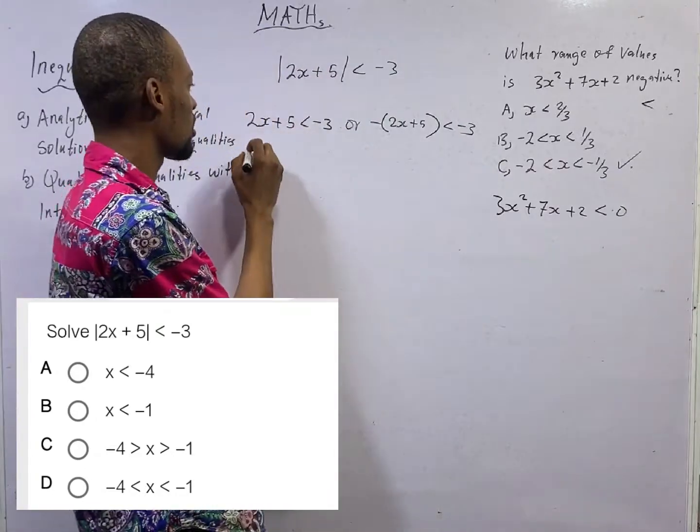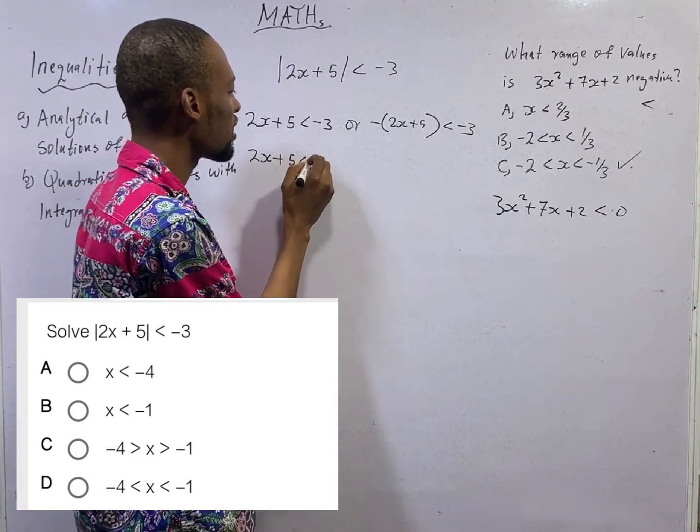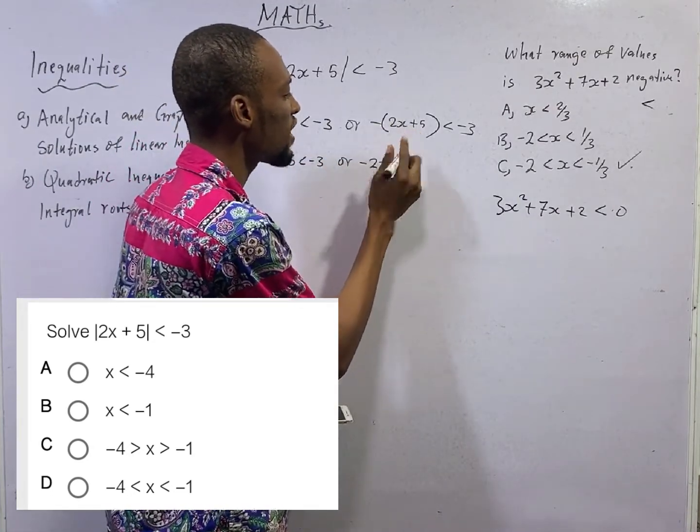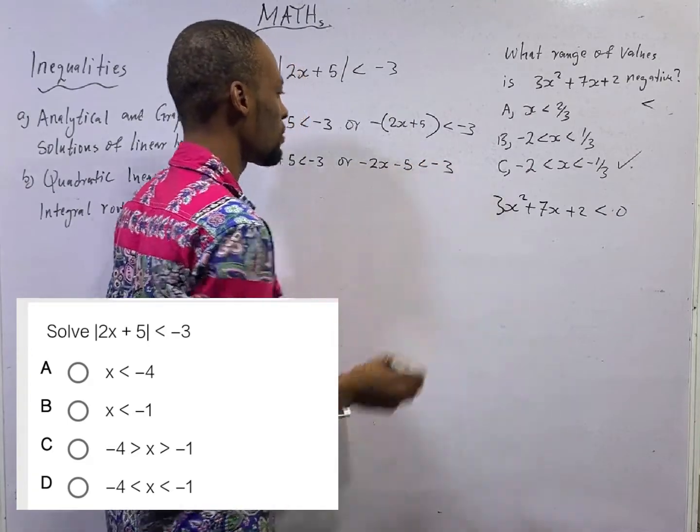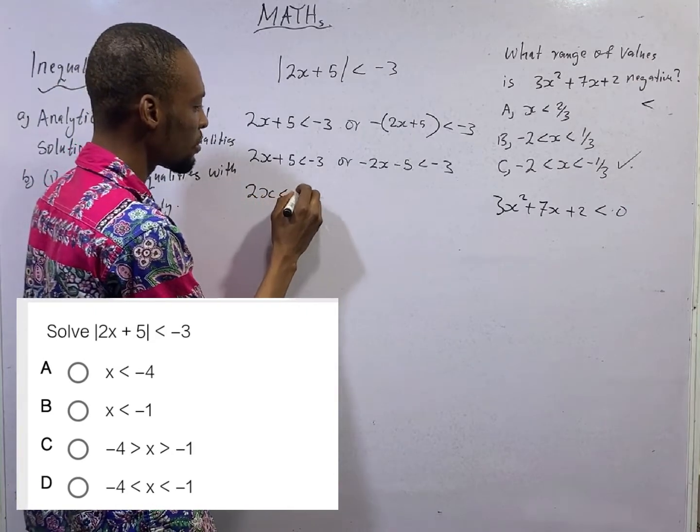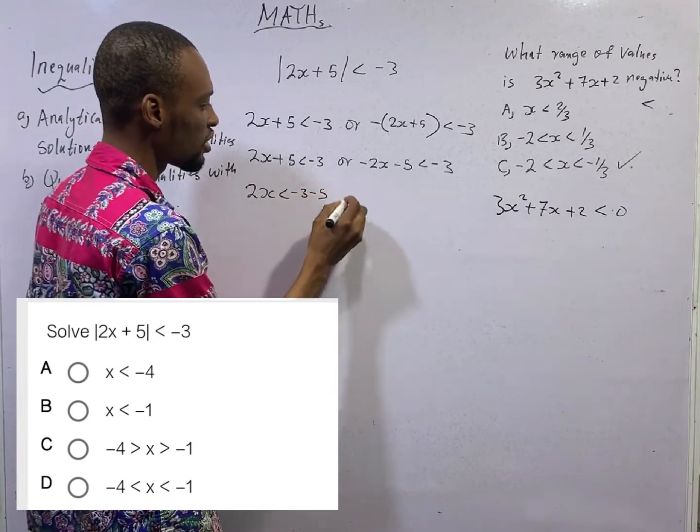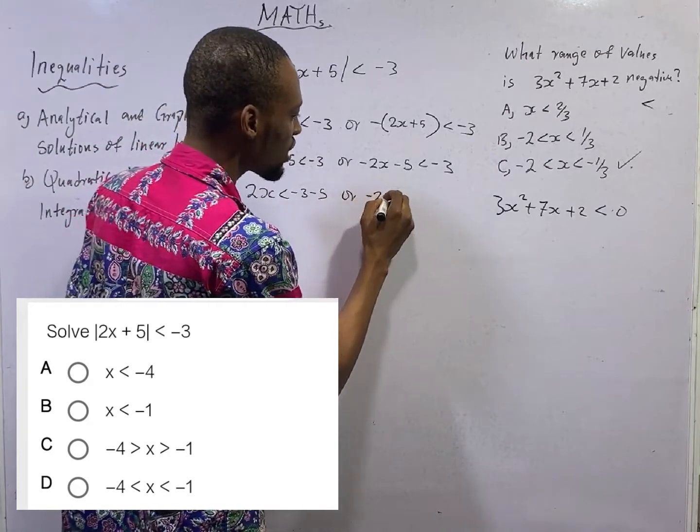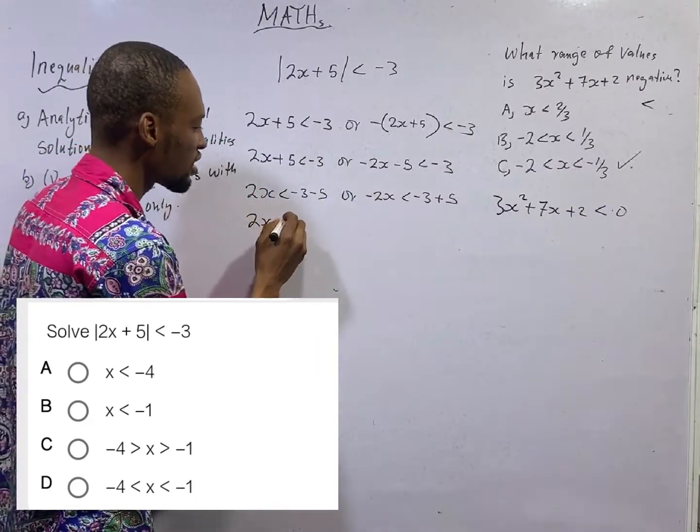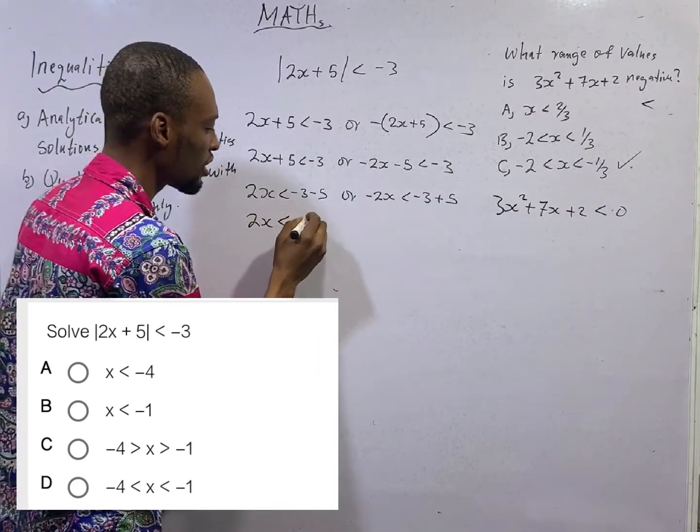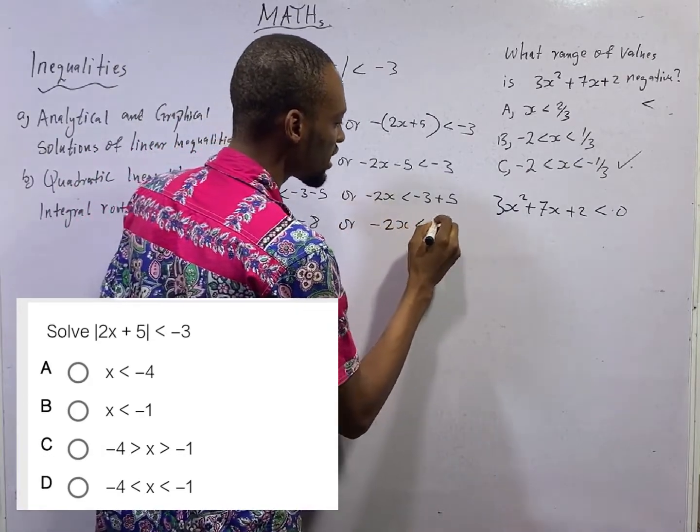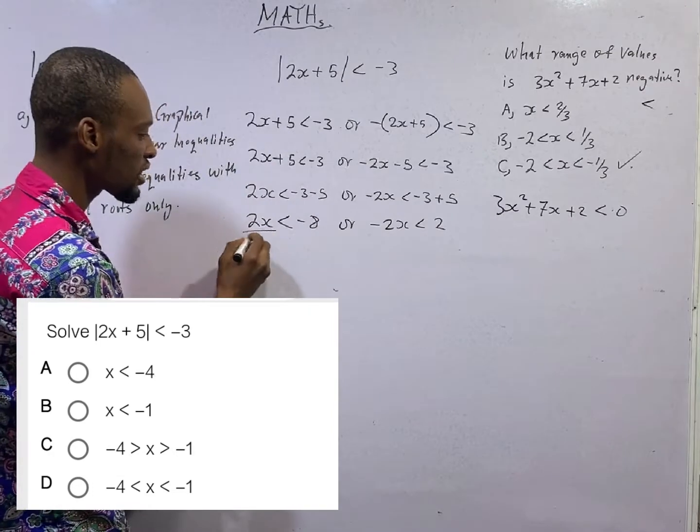From here, 2s + 5 is lesser than minus 3. Or, minus 2s minus 5 is lesser than minus 3. This will give us 2s is lesser than minus 3 minus 5. Or, minus 2s is lesser than minus 3 plus 5. 2s is lesser than minus 8. Or, minus 2s is lesser than 2.